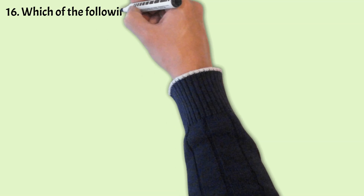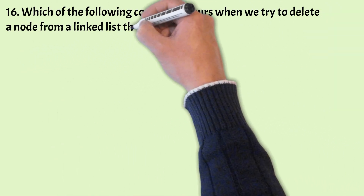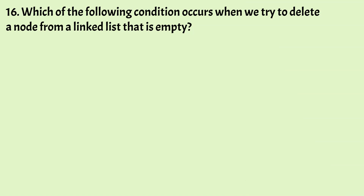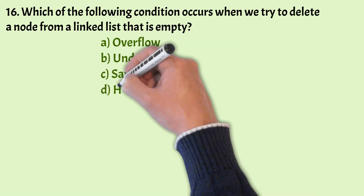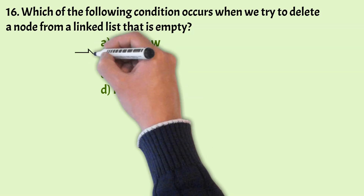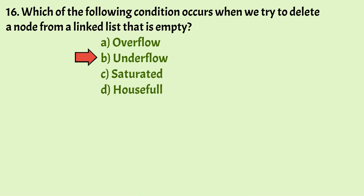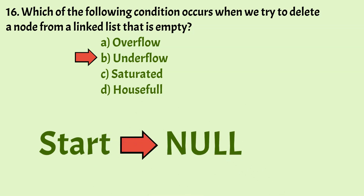The next question: which condition occurs when we try to delete a node from a linked list that is empty? The options are: overflow, underflow, saturated, houseful. The correct answer is Option B, that is underflow. We get an underflow condition when we try to remove a node from an empty linked list. When start goes to null or there are no more nodes to delete, this condition occurs.